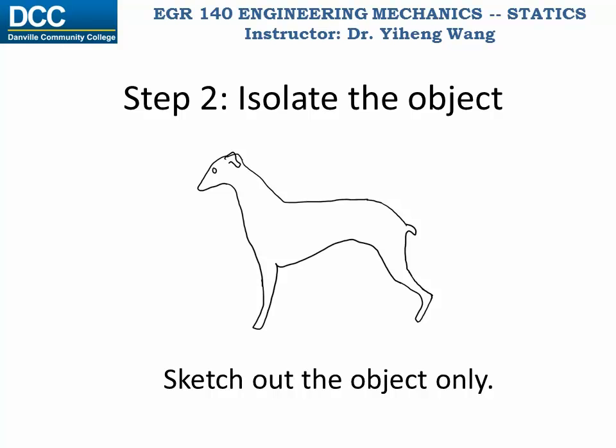Step 2: we need to isolate the object from its surroundings and sketch it. It is crucially important that you are clear what the chosen system is and make sure to only include that system. In this example, see how we don't include the string, the toy in the background, or the floor — just the puppy.